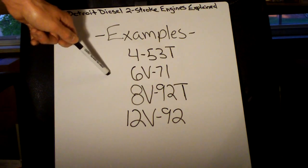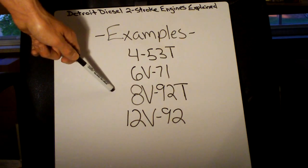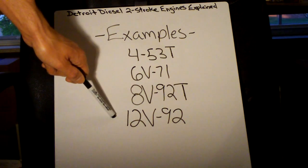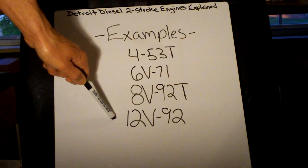You've got a 453T, 6V71, 8V92T, and the quite large 12V92.